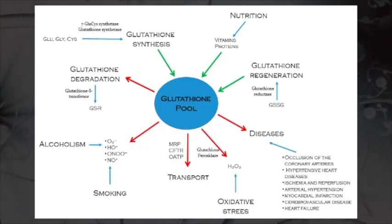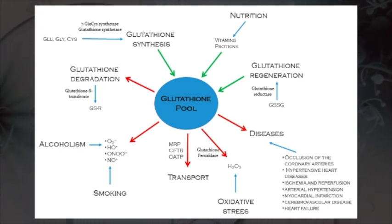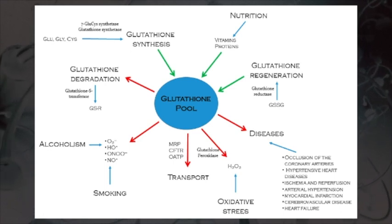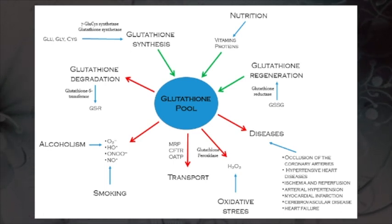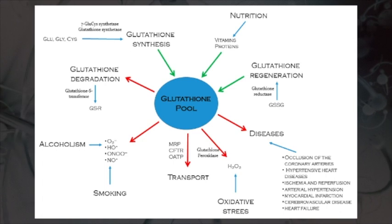It is important to maintain the glutathione pool required for various redox chemical pathways. That pool can be maintained by taking glutathione itself or ingredients that help make glutathione — like NAC — while also reducing challenges that deplete it, such as alcoholism and smoking.